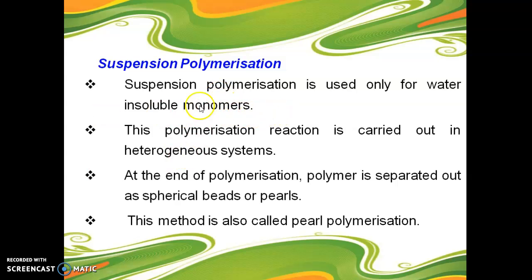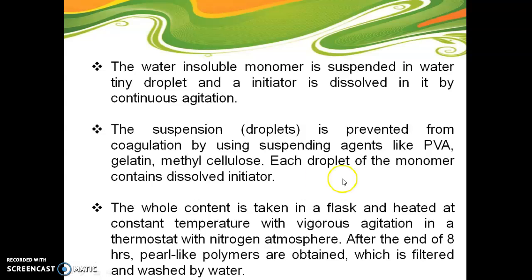In suspension polymerization, only water is used with insoluble monomers. This polymerization reaction is carried out under a heterogeneous system — that is, water soluble and water insoluble components. At the end of the polymerization, the polymer is separated out as spherical beads or pearls, so this method is also called pearl polymerization. The water insoluble monomer is suspended in water as tiny droplets and the initiator is dissolved by continuous agitation.